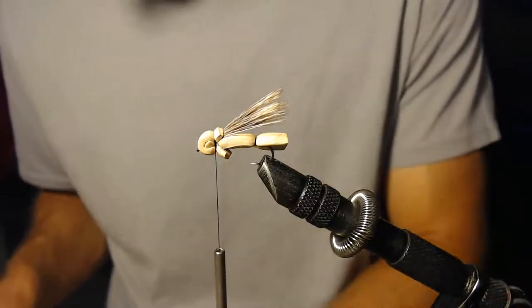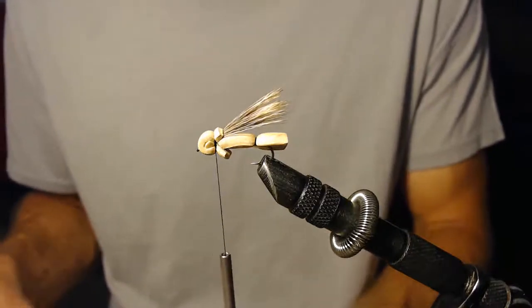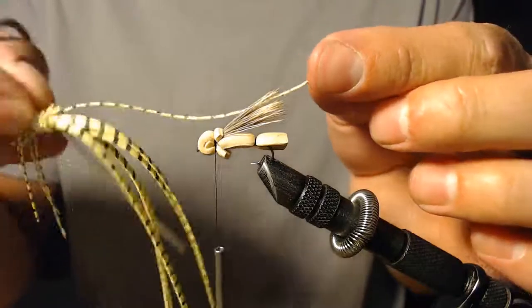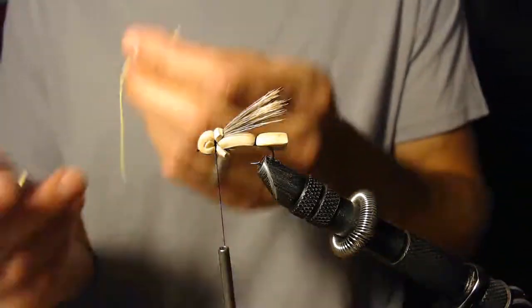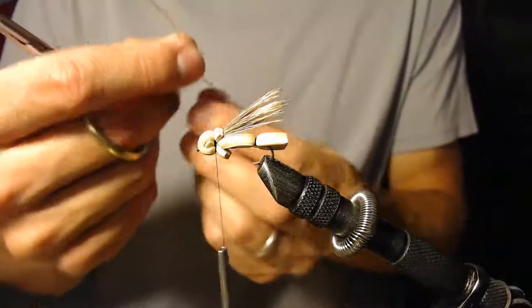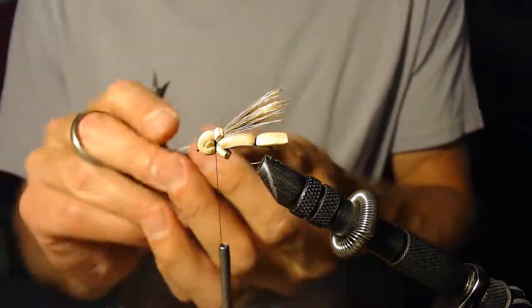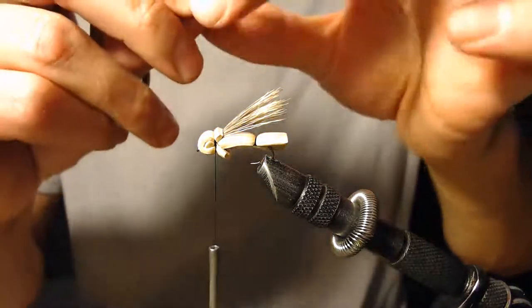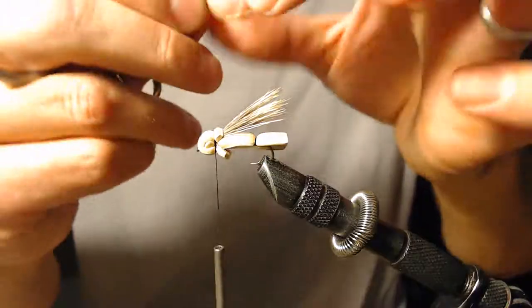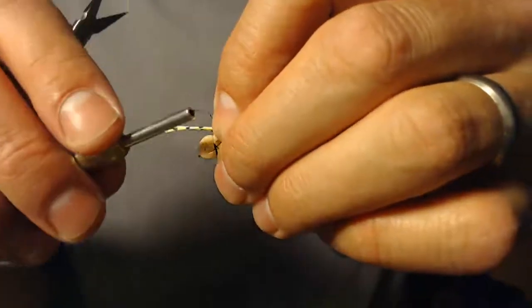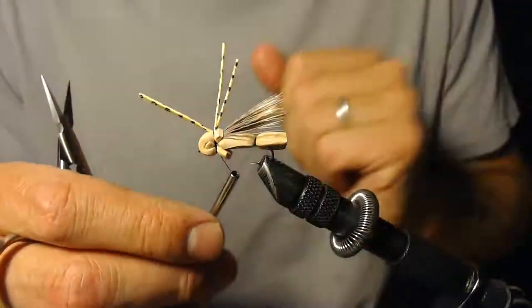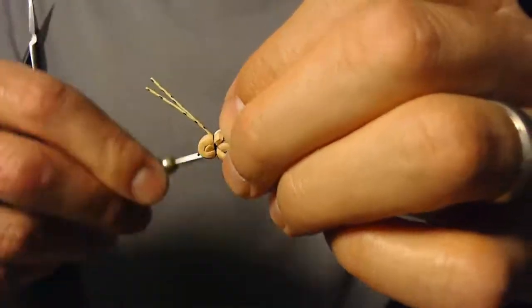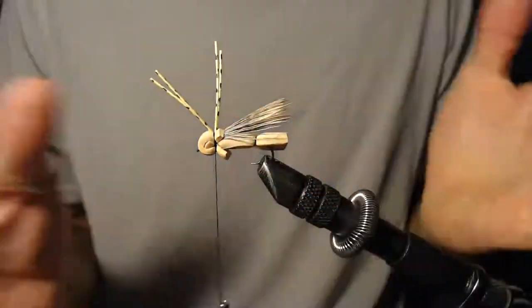Okay, now my last step is going to tie in some rubber legs here. I've got these yellow and black striped rubber legs. Cut myself a strip. Take two of them, and they're about an inch, inch and a half long. What I like to do is I'm going to tie them in right there where I tied the head of the fly in, and loosely give it three loose wraps.